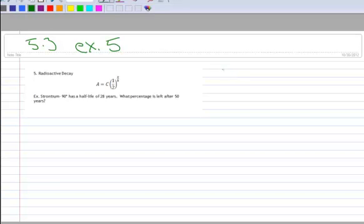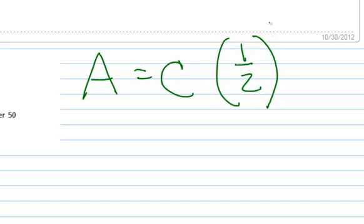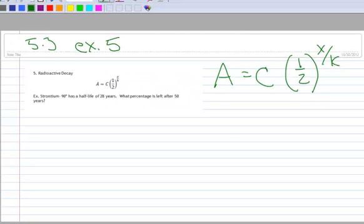All right, in this video we want to use the half-life formula, and here's the half-life formula. A equals C, and then the half-life, we put the half right there, and over X, or X over K.